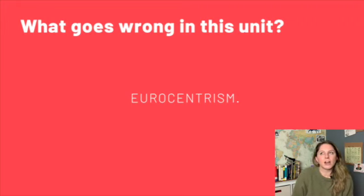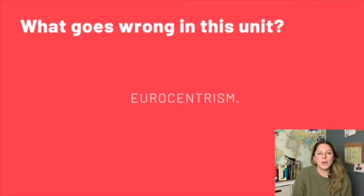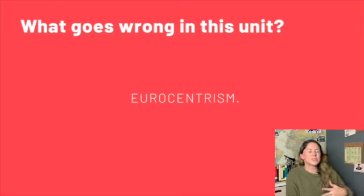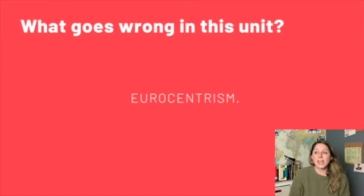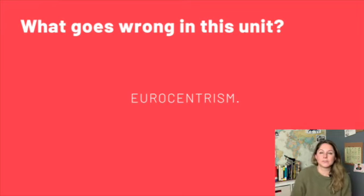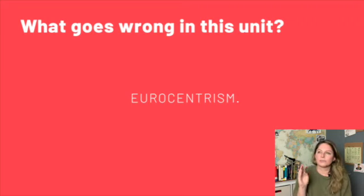What goes wrong in this unit? It's sort of the same things that went wrong in the actual era — eurocentrism. It is really tempting to oversimplify and just say 'Europe conquered the world,' because they kind of did, but AP World is about complexity and about the whole world. I have tons of lessons on the Scramble for Africa and I love George Orwell's short stories, but I've had to sacrifice some of those things to spend a whole day on the Tanzimat reforms or a whole day talking about violent responses to imperialism in Africa.